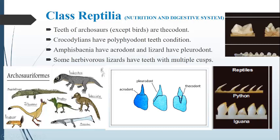You can see this is a thecodont tooth — the base of this tooth is covered by a socket of bone. This type of teeth is called thecodont teeth. Crocodiles have a thecodont type of teeth and they also have a polyphyodont teeth condition.